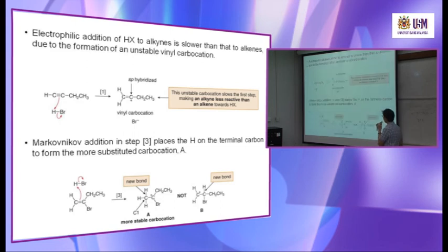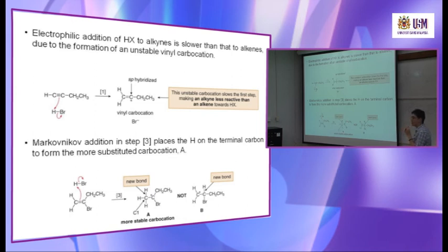There is an additional reason why the more substituted carbocation is more stable. First, it is more substituted. Second, it can form a resonance structure — the bromine in vinyl bromide has three lone pairs of electrons and can donate a lone pair to form a double bond with the carbocation center.